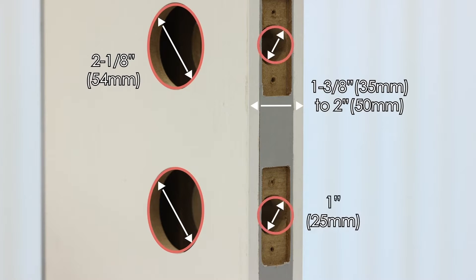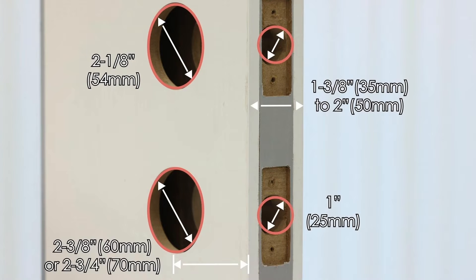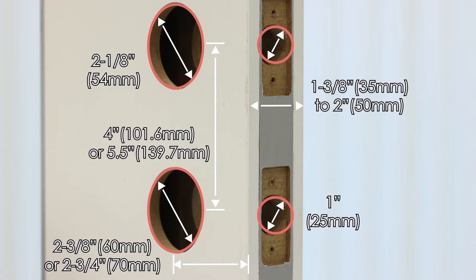Door edge hole must be 1 inch. The backset of the door holes should be 2 and 3/8 inches or 2 and 3/4 inches. Distance between the two front door holes must be 4 inches or 5.5 inches.